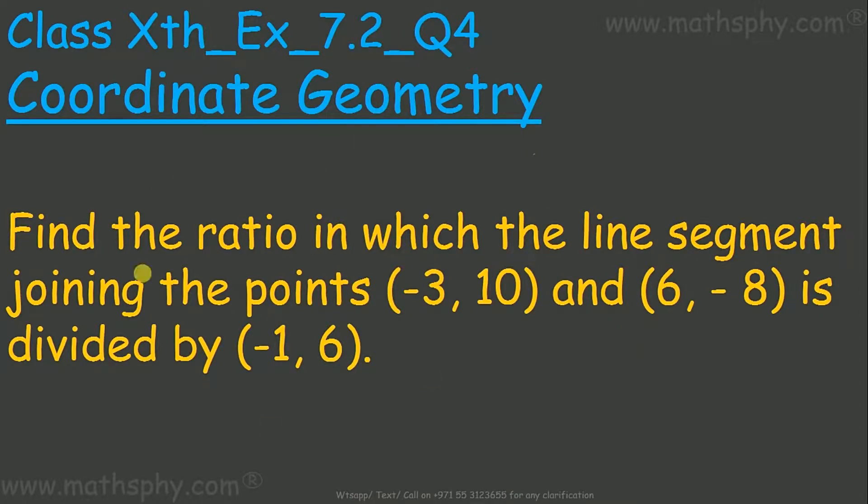This question says find the ratio in which the line segment joining the points (-3, 10) and (6, -8) is divided by (-1, 6). These two points are divided by this point. We need to find out the ratio of that division.